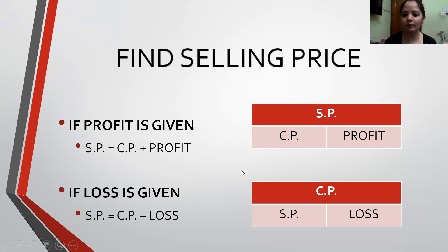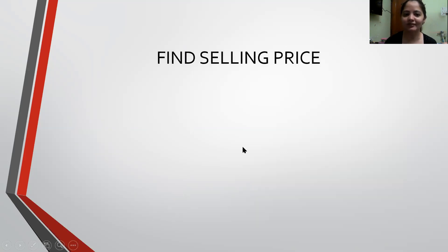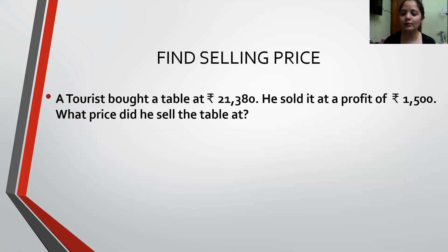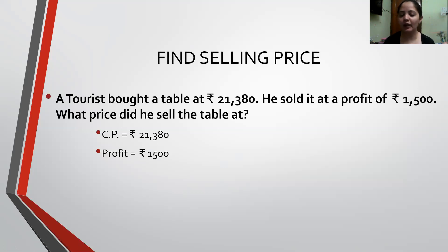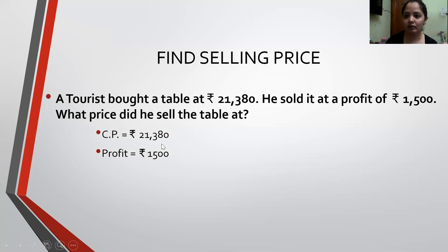Let's understand this with an example. A tourist bought a table at Rs. 21,380. He sold it at a profit of Rs. 1,500. What price did he sell the table at? Two things are given: the tourist bought the table, so the Cost Price is Rs. 21,380, and the Profit is Rs. 1,500.